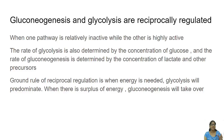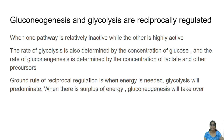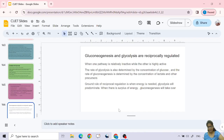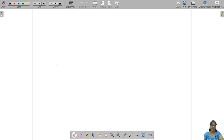Gluconeogenesis and glycolysis are reciprocally regulated: when one pathway is highly active, the other is relatively inactive. The rate of glycolysis is determined by glucose concentration, while the rate of gluconeogenesis is determined by lactate concentration. The ground rule is: glycolysis predominates when energy is required, and gluconeogenesis takes over when there is a large need for glucose.